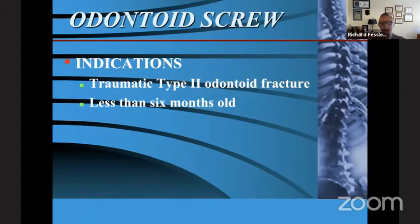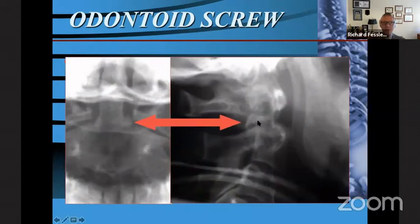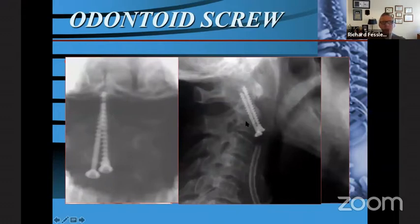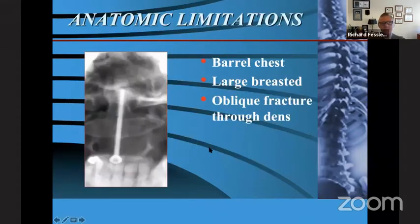The best indication for odontoid screws is a traumatic Type 2 odontoid fracture less than six months old. Originally we placed two screws — the first a lag screw to pull the odontoid down onto the body of C2, the second for additional strength — but ultimately we went to one screw. The failure mechanism is getting the wrong angle and missing the dens — here the screw is actually behind the dens in the spinal canal — and sometimes screws would translate and advance too far. Anatomic limitations include patients who are very barrel-chested, women with very large breasts, and oblique fractures through the dens, in which the odontoid screw doesn't work well.